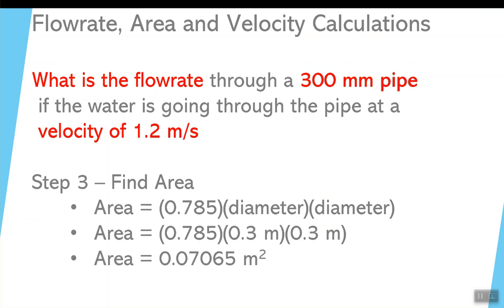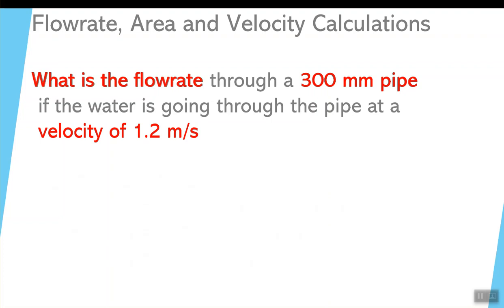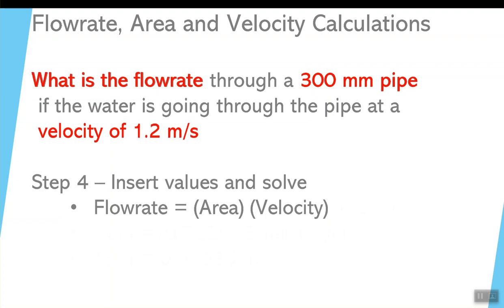And again, the bigger the diameter of the pipe, the bigger the area. It's like adding more lanes to a road. The fluid is going through at the same speed. But, because the diameter is bigger, your flow is going to be much bigger. So, plug that number into the formula. And we will be able to start calculating flow rate.